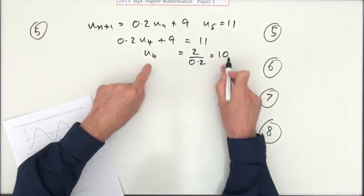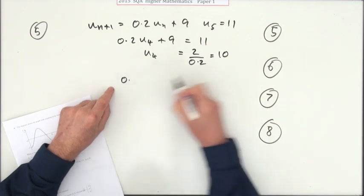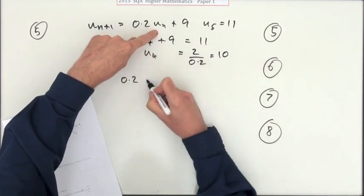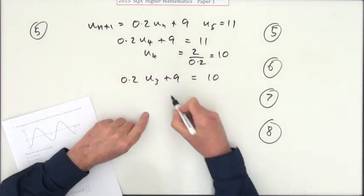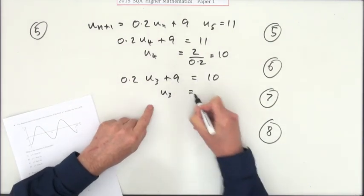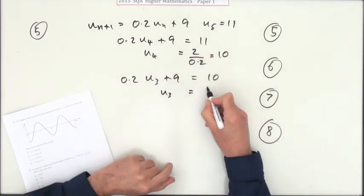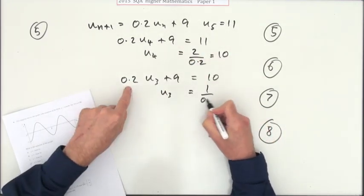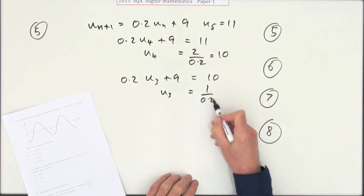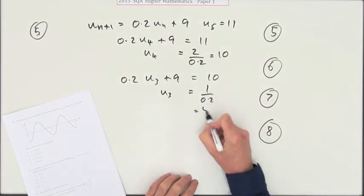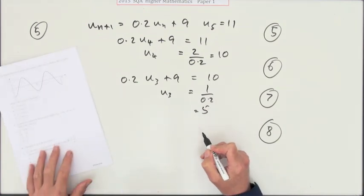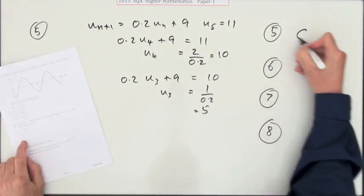So now I've got u4 is 10. How would I've got u4 other than 0.2 times u3? And that would have given me the 10. So that means that u3 will be, take the 9 across and subtract it, that's a 1, divide it by 0.2. Well multiply the top and the bottom by 10, that will be 10 over 2 which is 5. So finally we get the answer C.